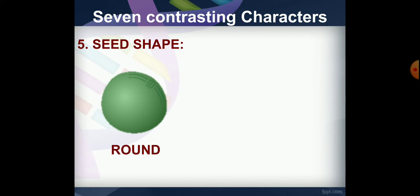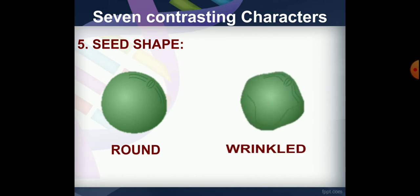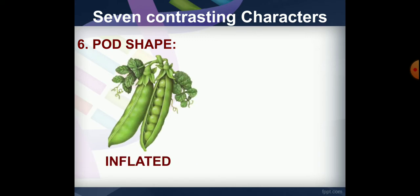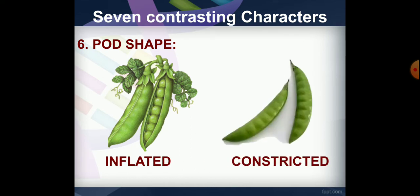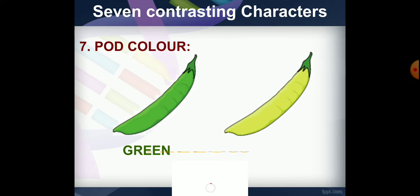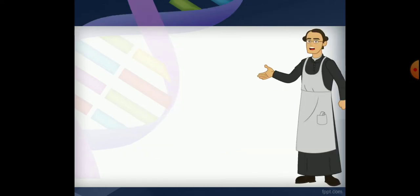The fifth characteristic is seed shape. Round is the dominant character. Wrinkled is the recessive character. The sixth character is pod shape: inflated versus constricted shape. The last character is pod color: green is dominant and yellow is recessive.